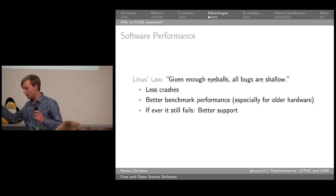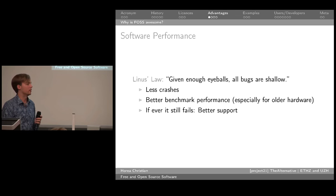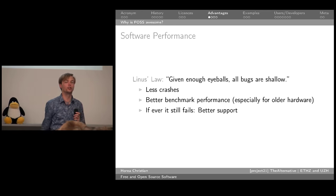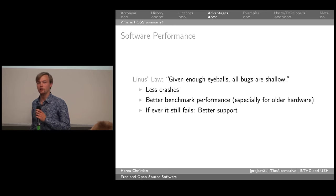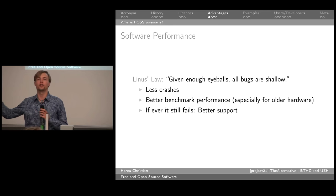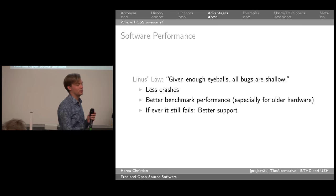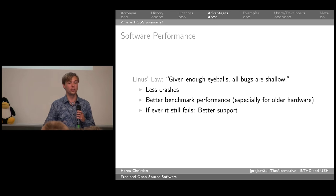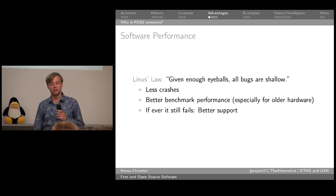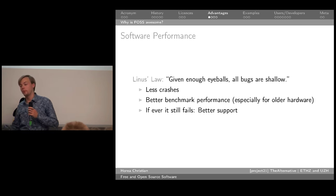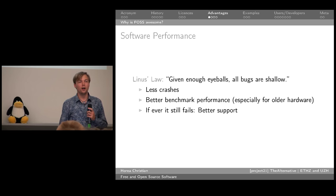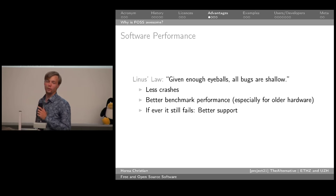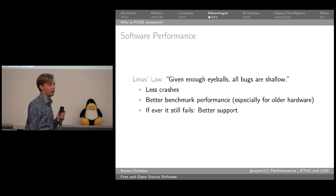Maybe the most important part — the advantages of free and open source software. One point is you might care because you're a very deeply ethical human being and care about freedom. But free and open source software has a lot of other advantages besides being morally good. It has the advantage of being very good in the software way — free and open source software tends to perform quite well. The sort of mantra of the free and open source world is: given enough eyeballs, all bugs are shallow.